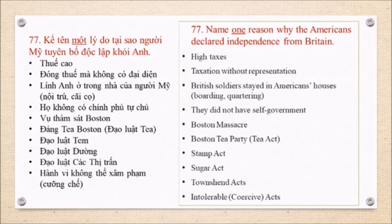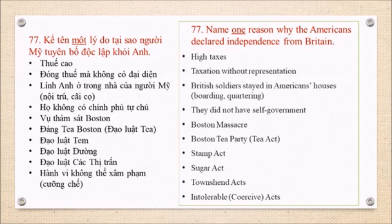Question 77: Name one reason why the Americans declared independence from Britain. High taxes. Taxation without representation. British soldiers stayed in Americans' houses — boarding, quartering. They did not have self-government. Boston Massacre. Boston Tea Party. Tea Act. Stamp Act. Sugar Act. Townshend Acts. Intolerable Acts.